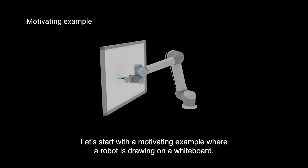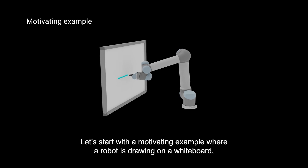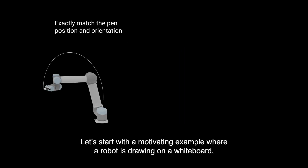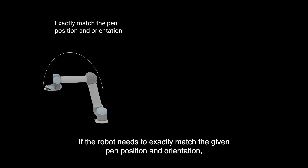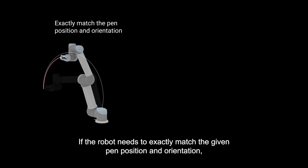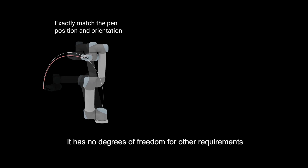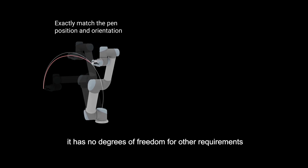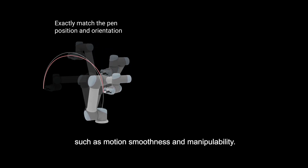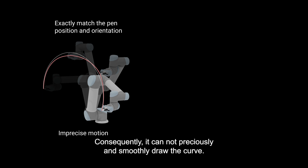Let's start with the motivating example where a robot is drawing on a whiteboard. If the robot needs to exactly match the given pin position and orientation, it has no degrees of freedom for other requirements such as motion smoothness and manipulability. Consequently, it cannot precisely and smoothly draw the curve.